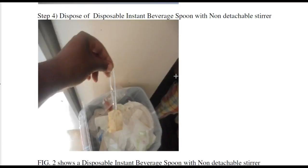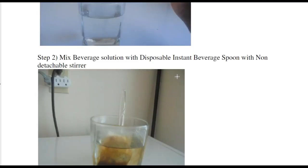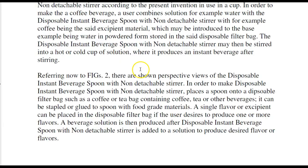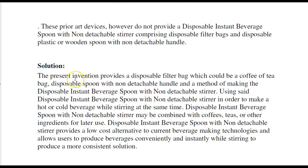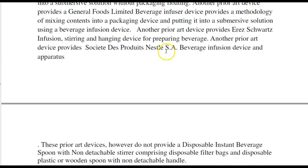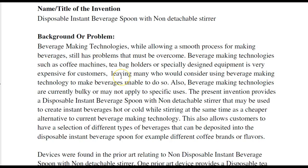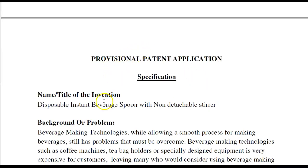Going back through the specification: the drawings, the detailed description of the invention, the solution to the problem your invention solves, the background or problem that exists, and finally the title of the invention. This is all called a specification and it all goes in your patent application.